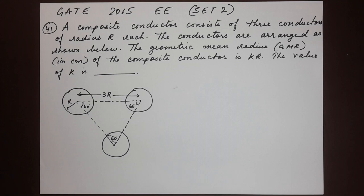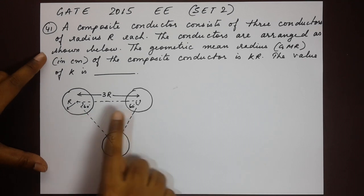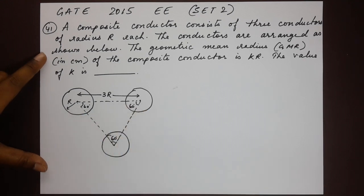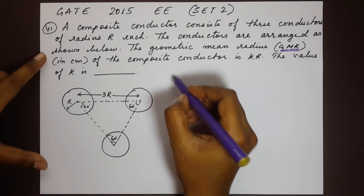We have been given an arrangement of the composite conductor having three conductors here, each of radius r. And you will notice that the distance from one radius to the other is 3r. Now in order to find out what the value of k is, we have to first find out what the expression for GMR is. We start with that.